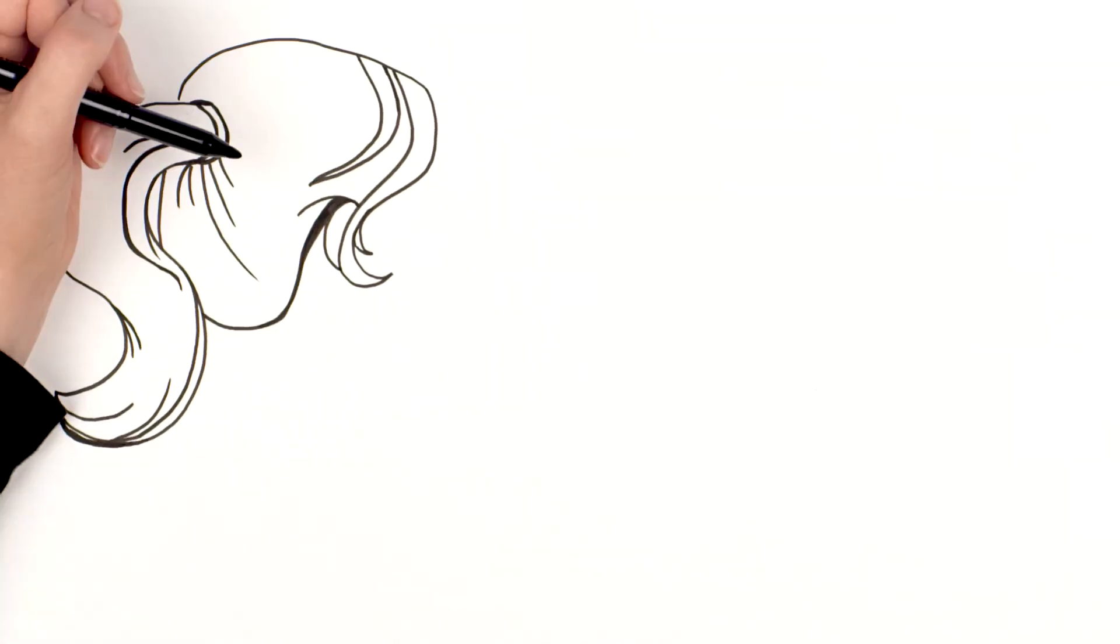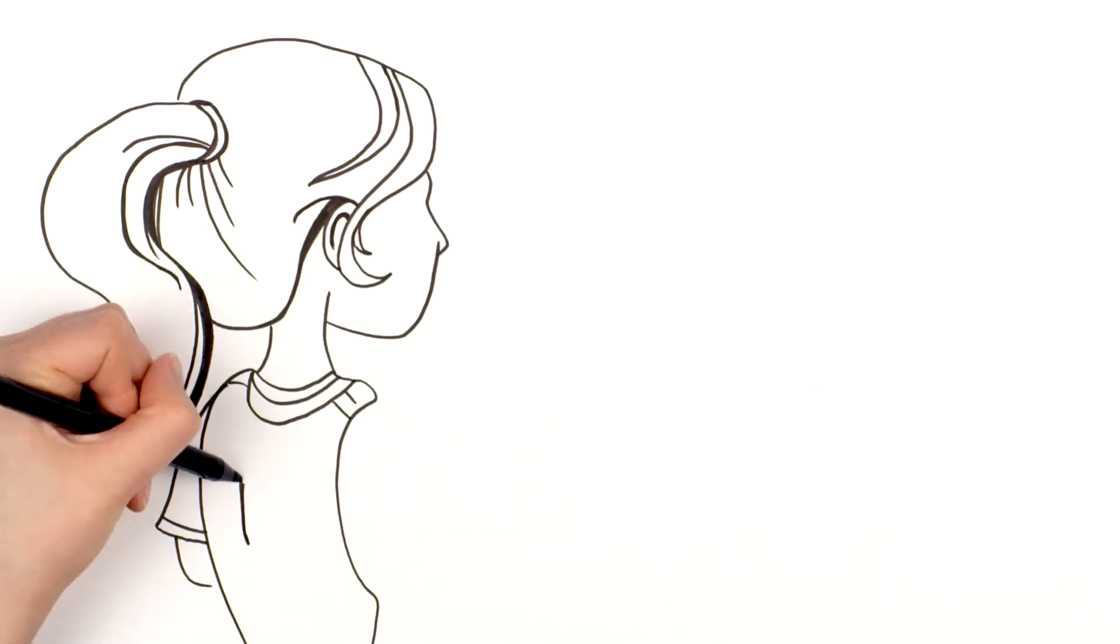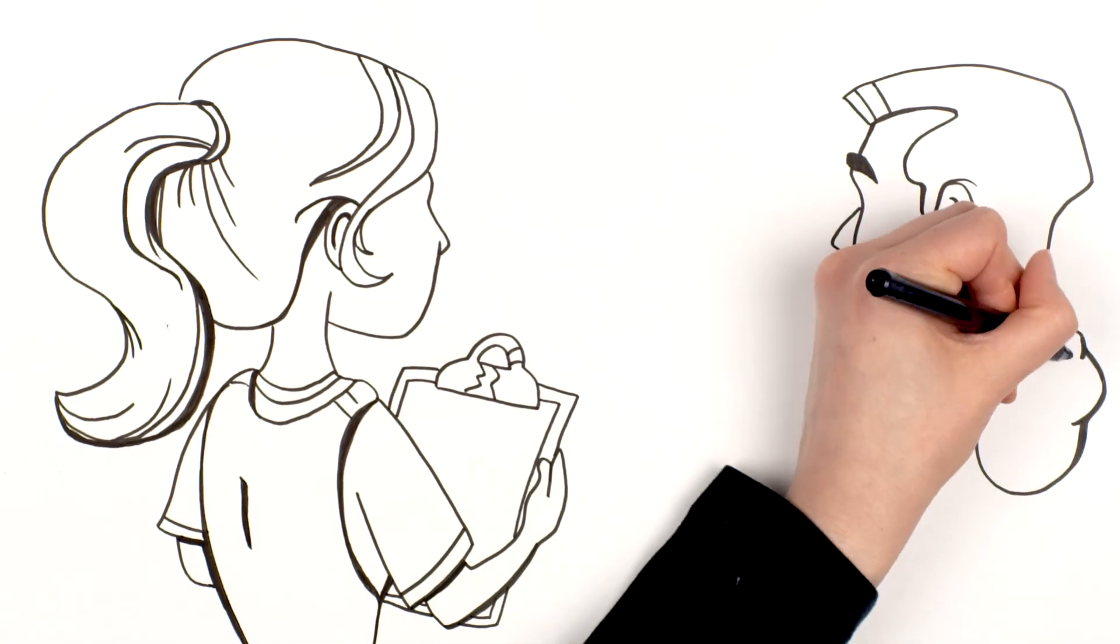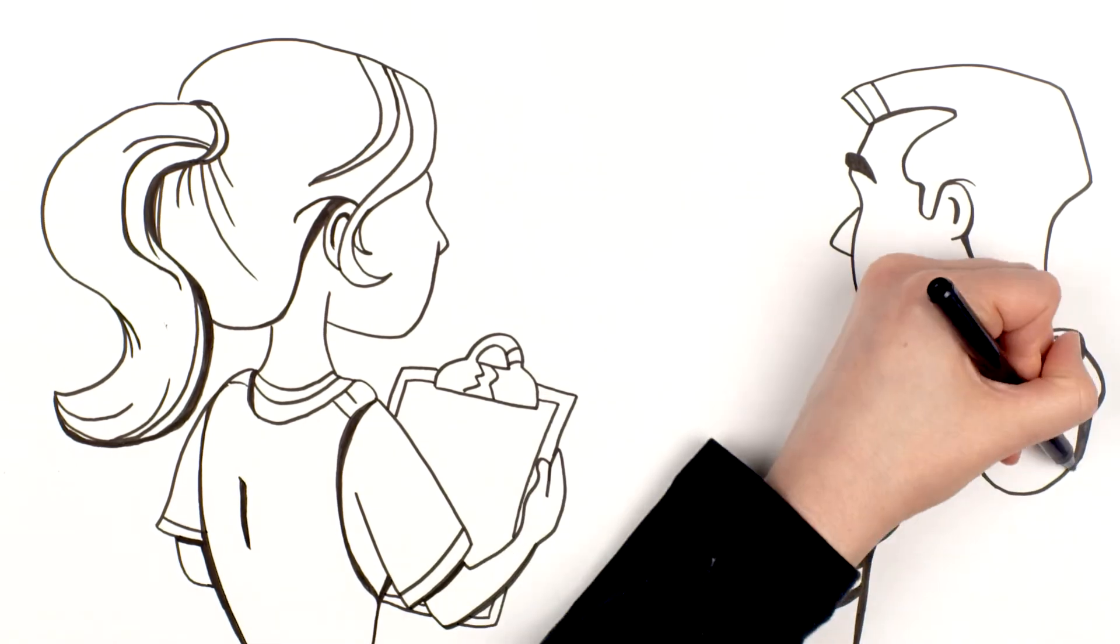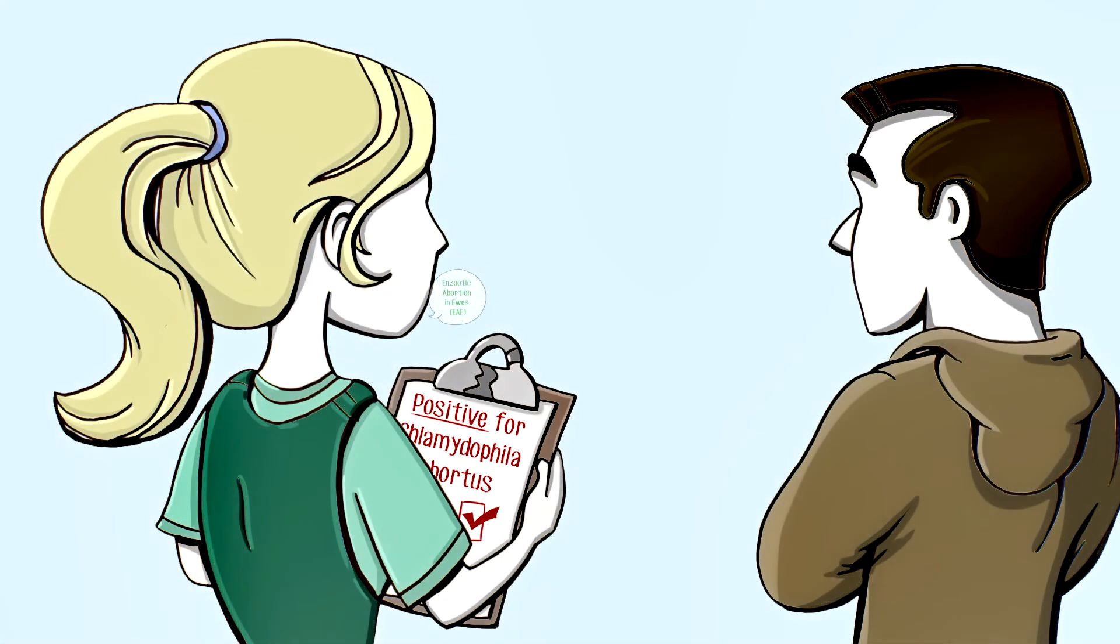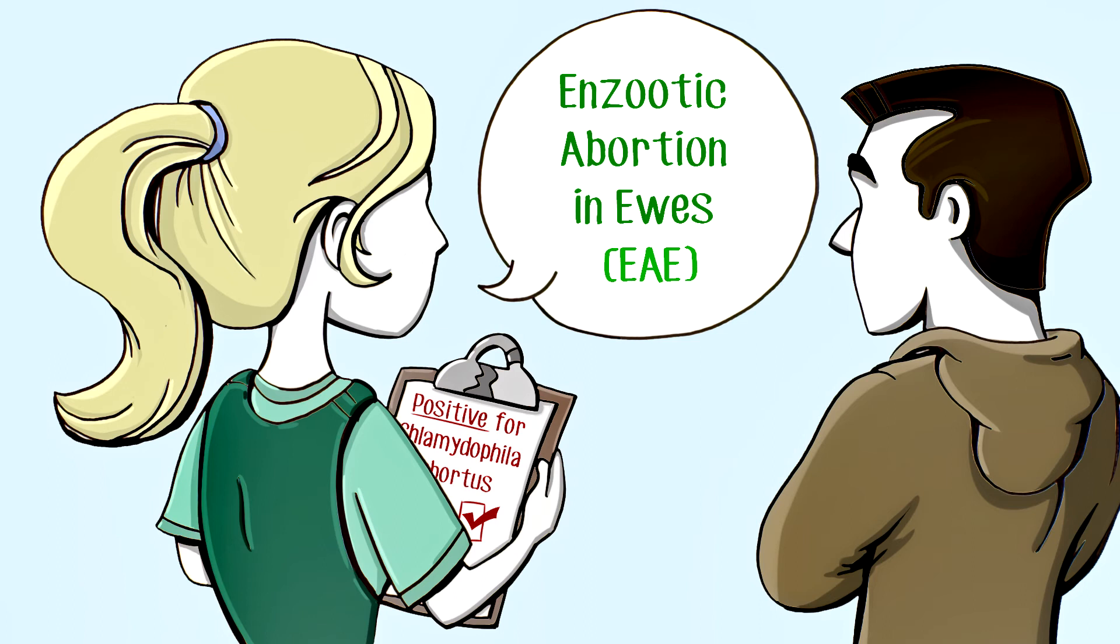Once the test results from the lamb I submitted came back, my vet and I reviewed the results together. Turns out the abortion storm in my flock was caused by something called Chlamydophila abortus, which is a bacteria that's easily spread through the body fluids of the infected ewe. Apparently this is also called Enzootic Abortion in ewes, or EAE.